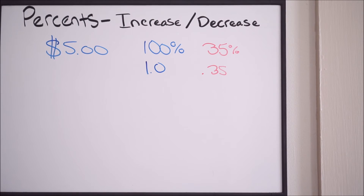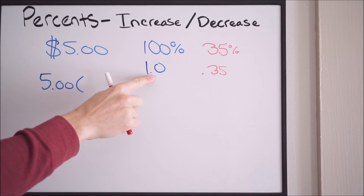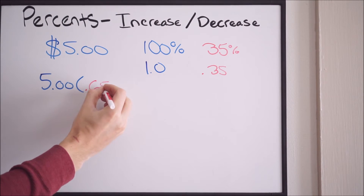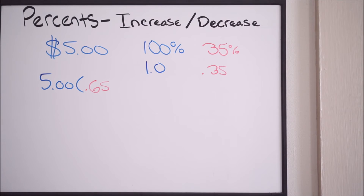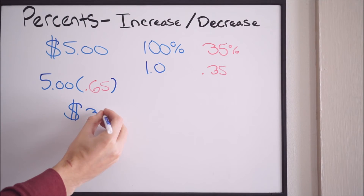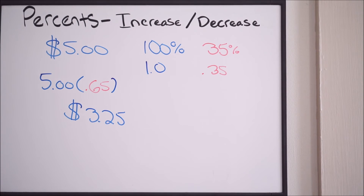When you do 1.0 minus 0.35, you get 0.65. So all you have to do is 5 times 0.65. Putting that into your calculator — 5 times 0.65 — you see that you get 3.25. That's your new price: $3.25. So that's your new price with a 35% discount, or the item is 35% off — it's on sale. That is percent increase and decrease.